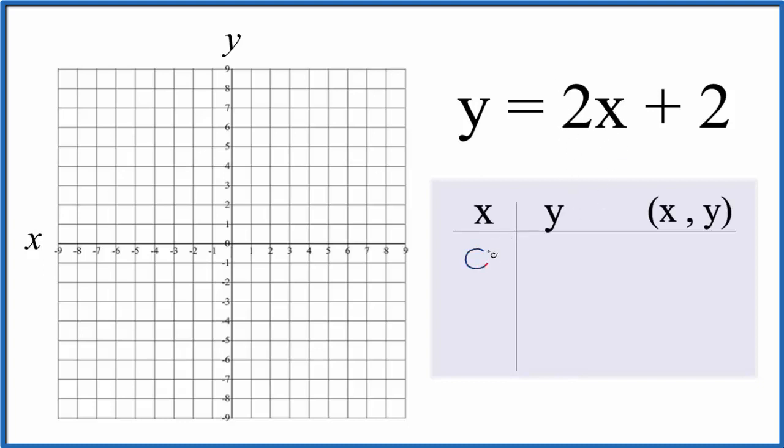Let's put some values in for x. I like to start with 0 since I know that's going to be on my graph. 2 times 0 is 0 plus 2, that gives us y = 2. Let's put 1 in for x: 2 times 1 is 2 plus 2, that gives us 4 on the y-axis. Then let's use -1: 2 times -1 is -2 plus 2, that gives us 0.